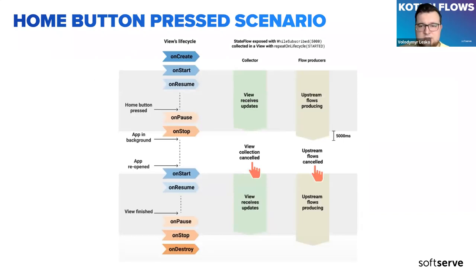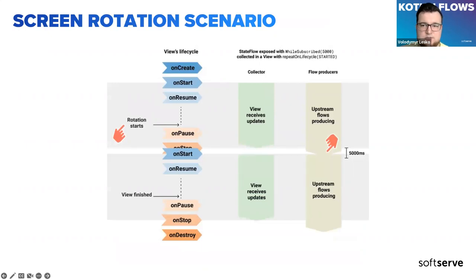In this diagram we can see what happens when the app goes to the background after pressing the home button. The view is receiving updates and the StateFlow has its upstream flow producing normally. When the view stops, collection ends immediately, but because our StateFlow is configured with a timeout, it keeps running for five more seconds. After the timeout passes, all upstream flows are cancelled. In the rotation scenario, the view is only stopped for a very short period — less than five seconds — so the StateFlow never gets cancelled and keeps upstream flows active. It actually works the same way as LiveData.